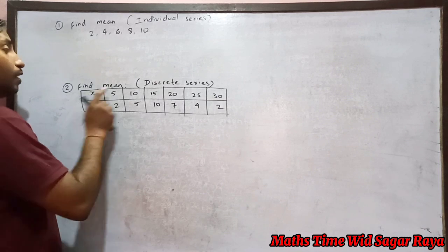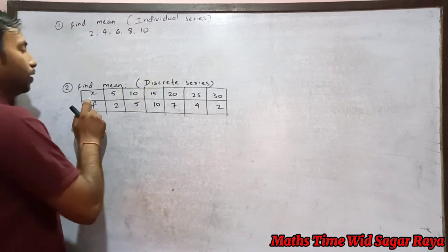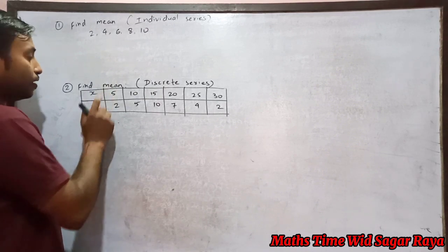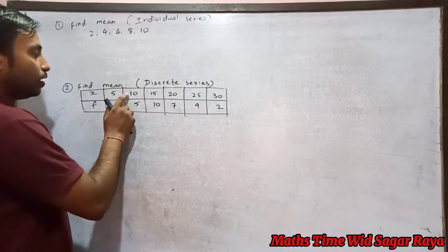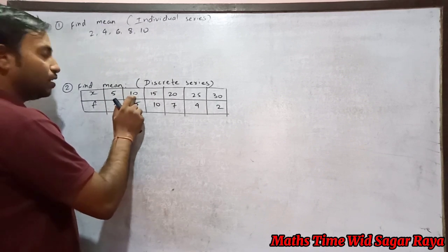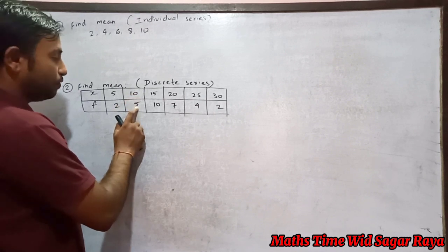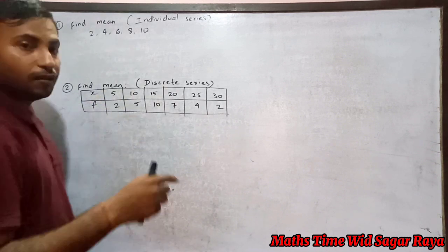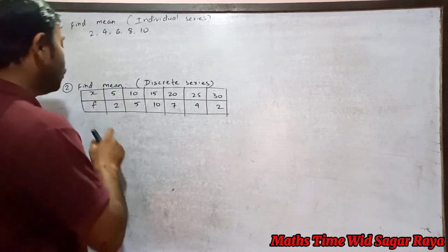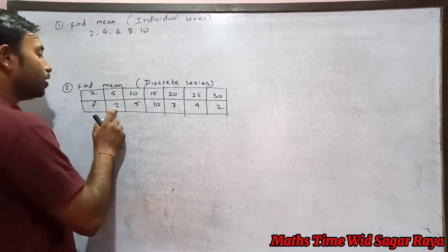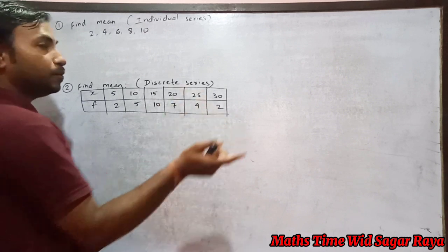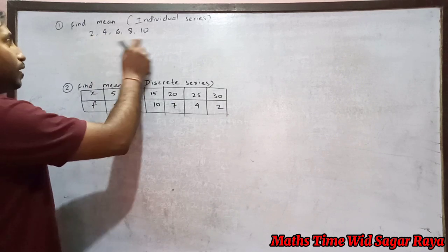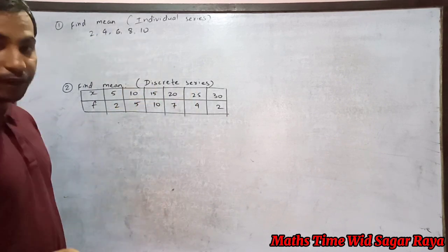In discrete series, whenever we are going to find the mean, suppose if we have data here 5, but its frequency is 2. If the data is 10, frequency of 10 is 5. Similarly frequency of 15 is 10. It means every data has got different frequency. Individual series means every data has frequency 1, and in discrete series their frequency is different.